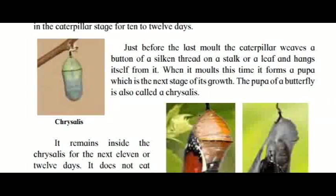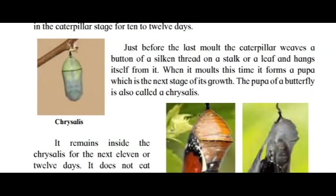Just before the last molt, the caterpillar weaves a button of silken thread on a stalk or a leaf and hangs itself from it. When it molts this time, it forms a pupa, which is the next stage of its growth. The pupa of a butterfly is also called a chrysalis.